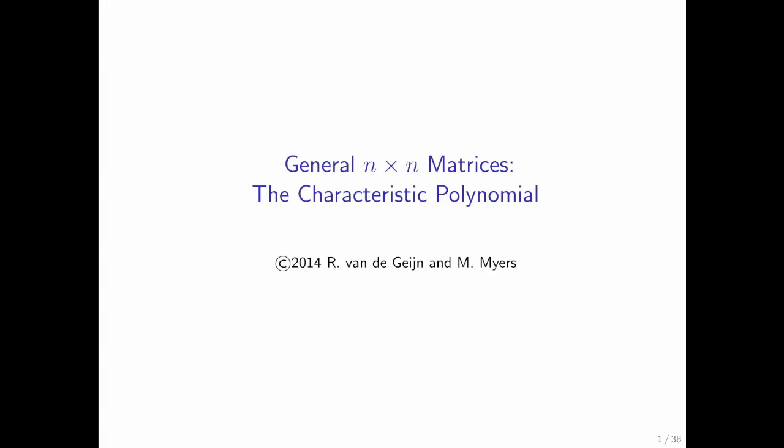Now that we have reviewed a few simple matrices that are n by n but have special structure, and we've seen that for those matrices it is relatively easy to find the eigenvalues and eigenvectors, we're ready to discuss the general case of an n by n matrix. What we're going to see is that the characteristic polynomial is again going to be key.